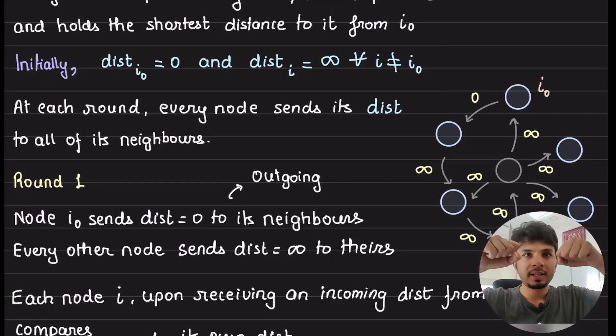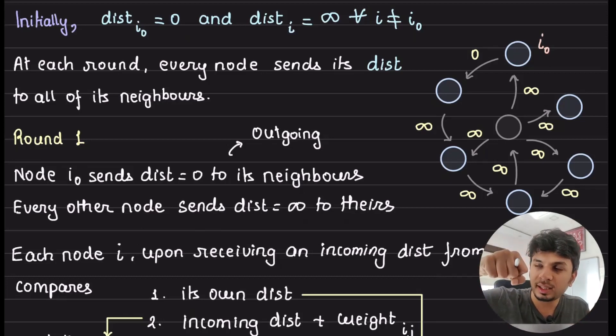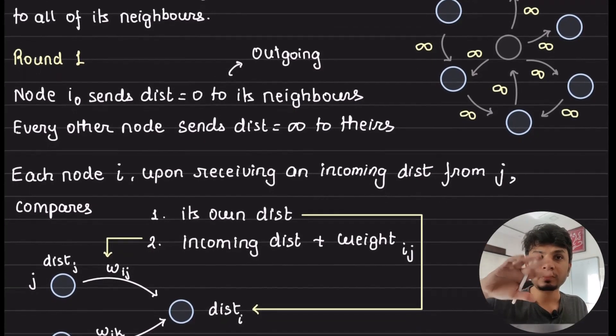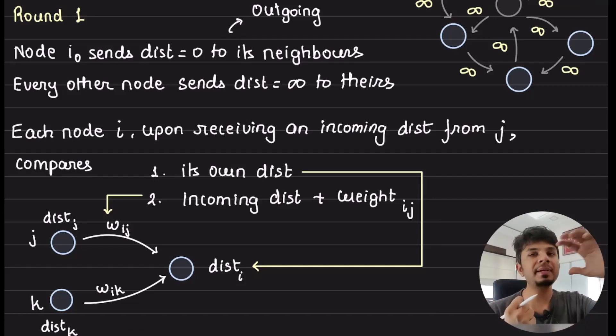Now at each round, what happens? Steps are pretty simple. At each round, every single node sends out its dist to all of its neighbors. So in round one, every single node participating sends out the dist that it has to all of its neighbors. So i0's dist is zero, so i0 will send zero to every single node that sits in its neighborhood. And then every other node, because they all have dist as infinity, they would send infinity to their neighbors. And this is what happens every round.